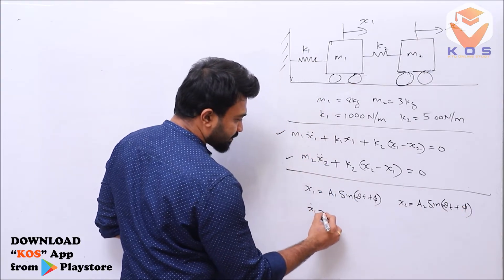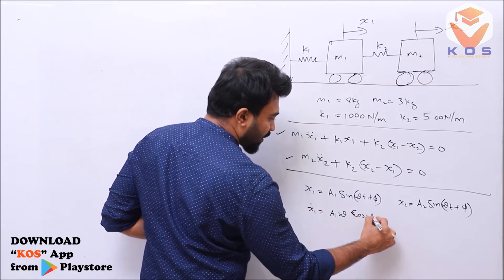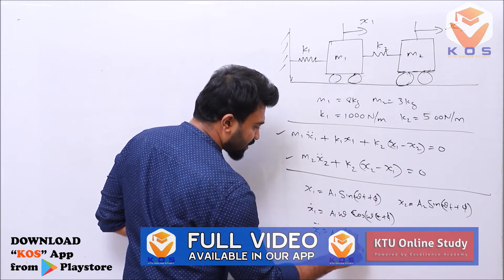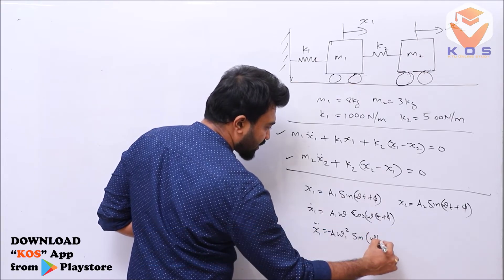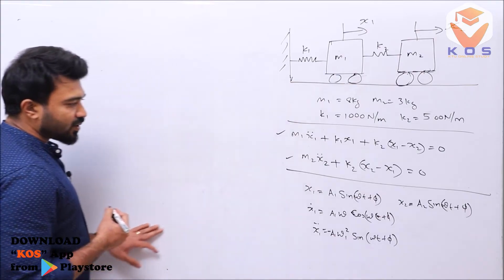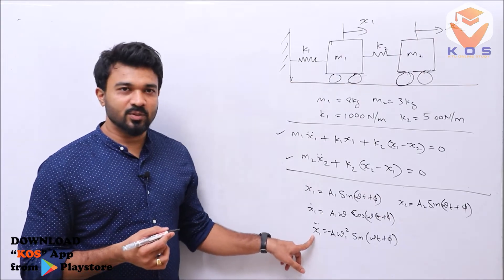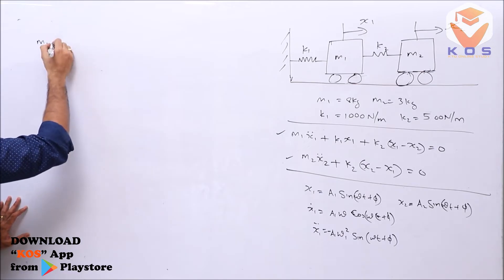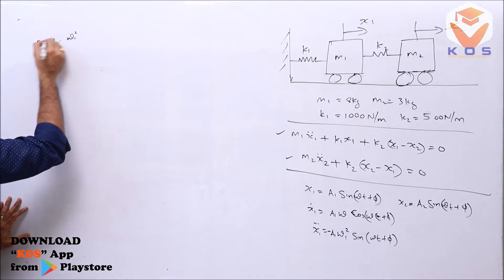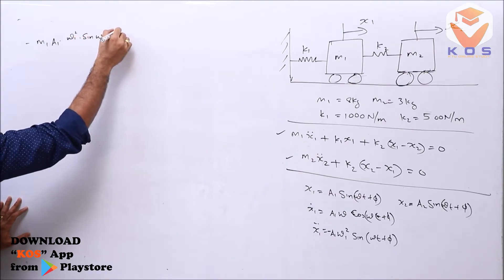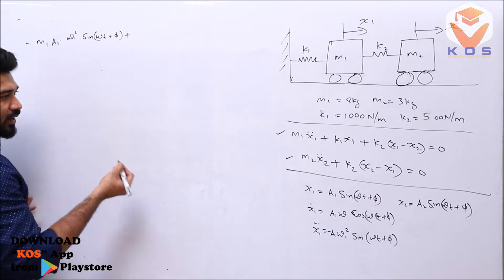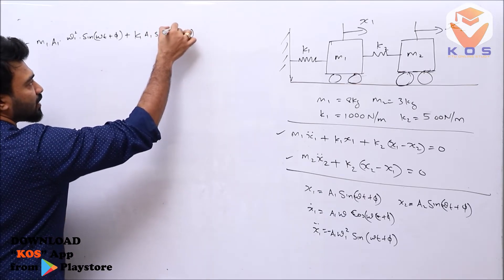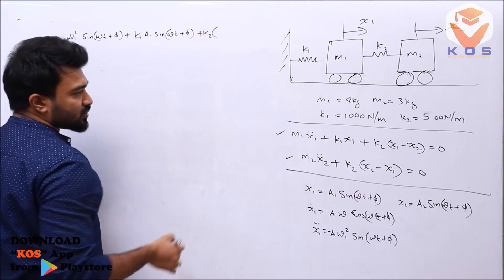So x1 dot = a1 ω cos(ωt + φ), and x1 double dot = -a1 ω² sin(ωt + φ). Similarly x2 double dot = -a2 ω² sin(ωt + φ). Substituting into the first equation: m1 times (-a1 ω²) sin(ωt + φ) plus k1 times a1 sin(ωt + φ) plus k2 times (x1 minus x2) equals zero.